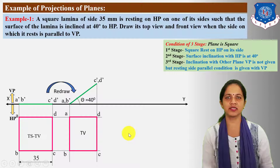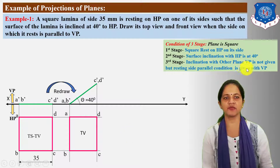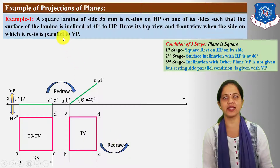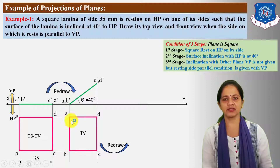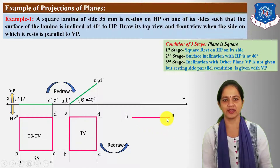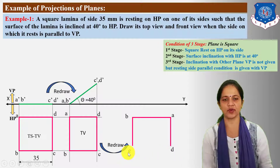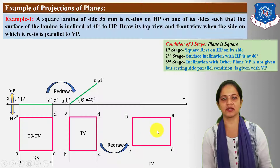Next, draw the third stage top view and front view. In the third stage, the condition with VP is given. Redraw the second stage reduced top view as per the given condition with VP. The side on which it rests is parallel to VP, meaning the left side AB is perpendicular to VP and parallel to HP. In the third stage, make the AB side parallel to VP or parallel to XY. Draw AB line of this reduced shape parallel to XY, then from A' and B' draw perpendicular lines as per size and mark D' and C' points. Connect CD to complete the third stage top view.